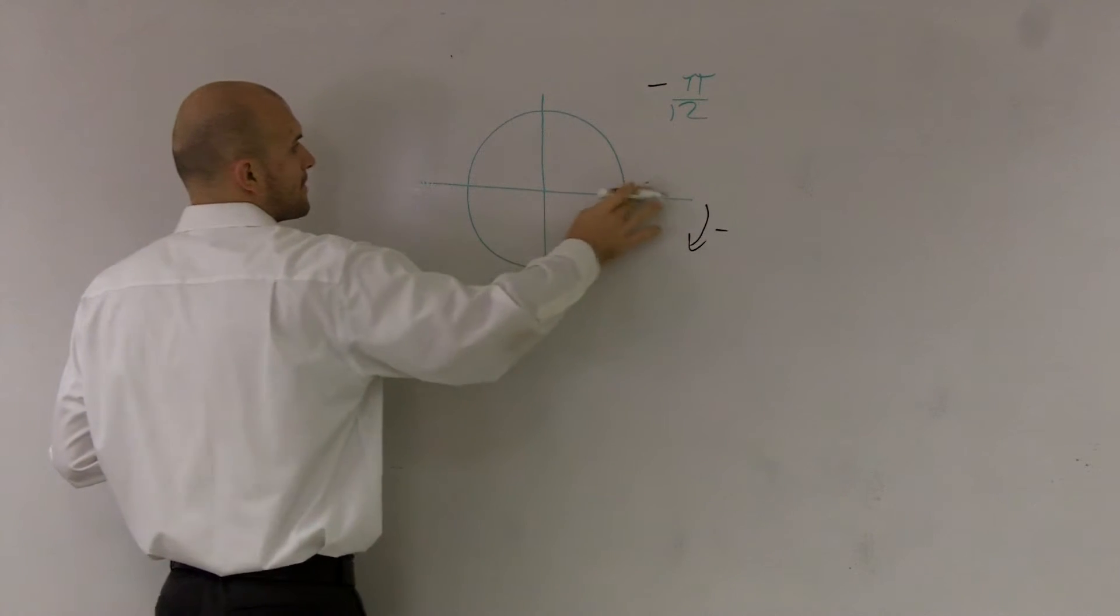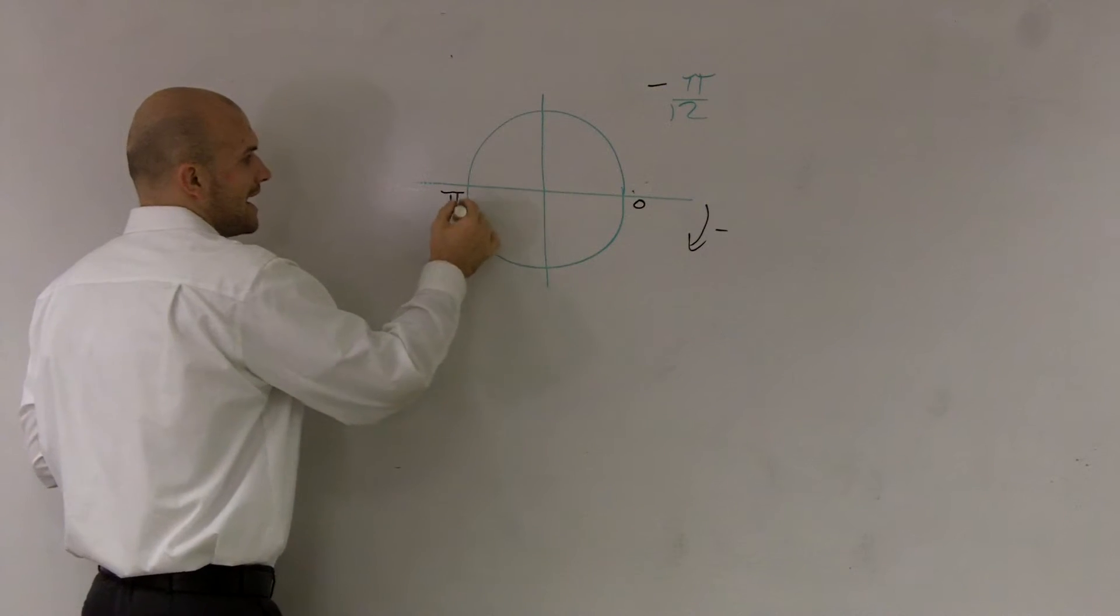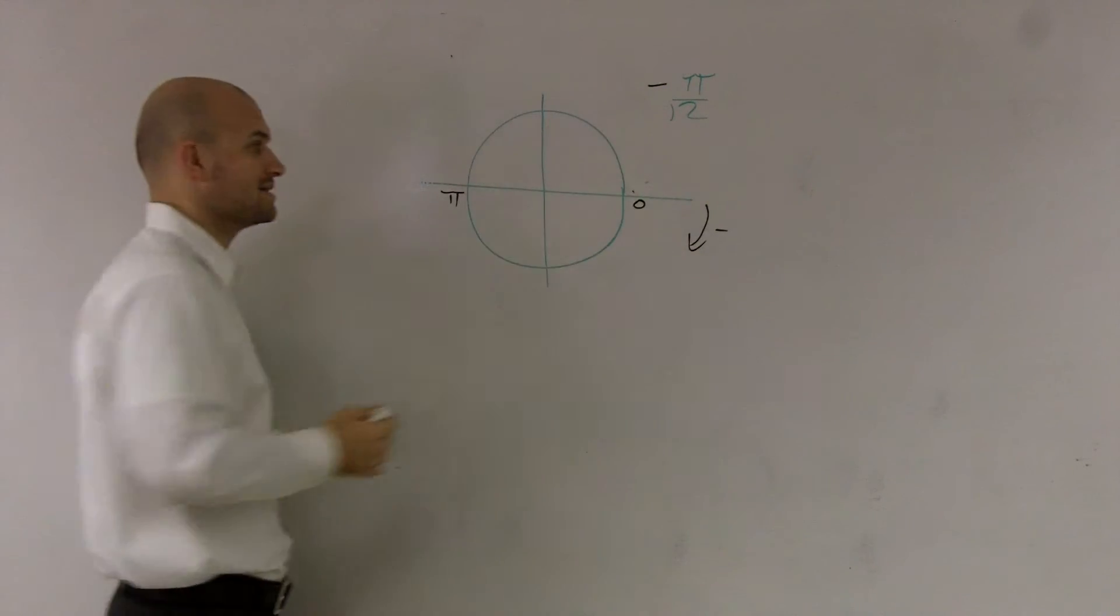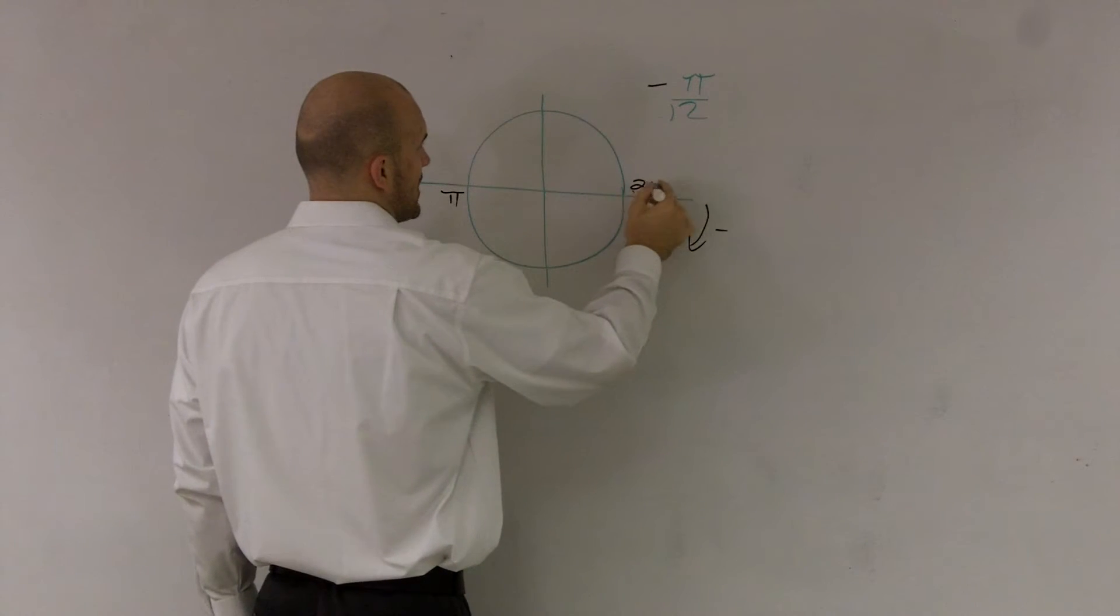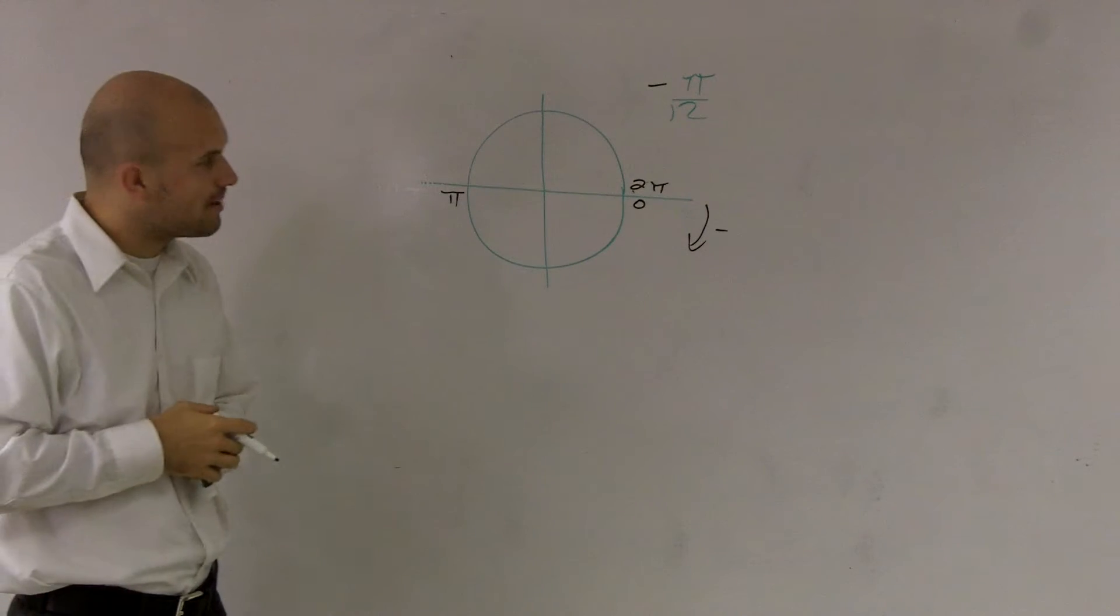Well, remember, you start at 0 degrees. You go all the way around would be π. And then if you go all the way around with 360, that would be 2π. So therefore, it says, what is negative π over 12?